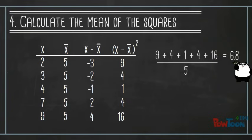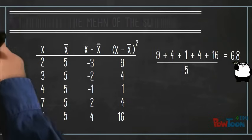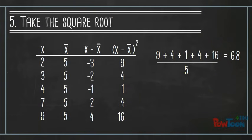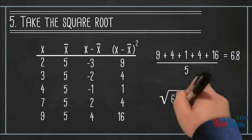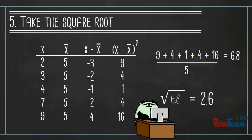The final step is to take the square root. This counteracts the squaring we did earlier and allows the standard deviation to be expressed in the original units. The square root of 6.8 is about 2.6, and that's the standard deviation. We're done.